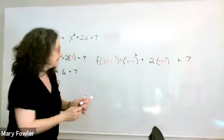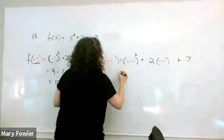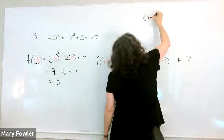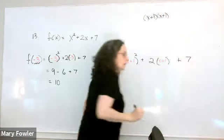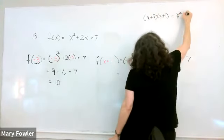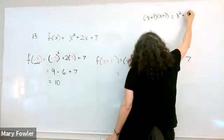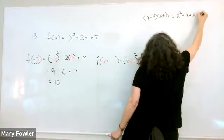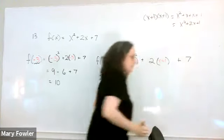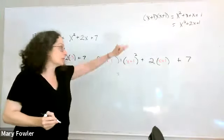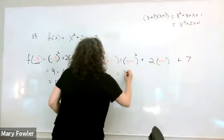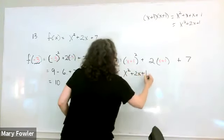And now we need to evaluate x plus 1 squared. Let's take it up here for a moment. x plus 1 squared is x plus 1 times x plus 1. We're going to distribute or use FOIL. So you might be able to do that without showing quite so much work. That's fine. So when we square this, we get x squared plus 2x plus 1.